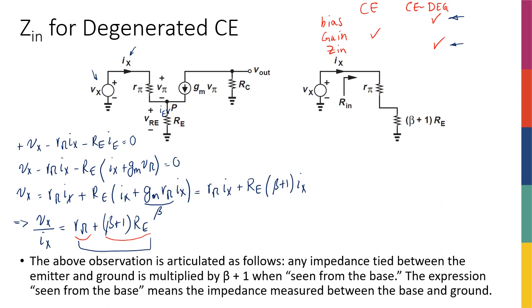One very common mistake I've seen: when people write KVL on this path, they think r_pi and re are in series and say the input resistance is just r_pi plus re. But from electrical circuits, two resistors are in series only when they have the same current. We just saw that r_pi has ix flowing through it, while re had (beta + 1)·ix — so they are definitely not in series.